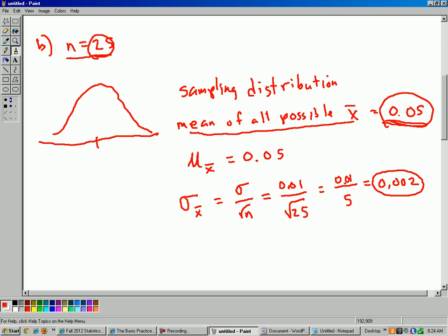So what does this sampling distribution look like? 0.05 is right in the middle. Let's go up three standard deviations, down three standard deviations. And so, plus one standard deviation is 0.052, two standard deviations is 0.054, three standard deviations is 0.056.